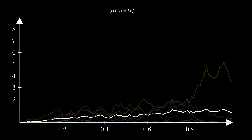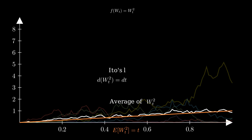The average of W squared — the white line — trends upward. As the number of simulated paths increases, the average of W squared would eventually converge to the theoretical average. See that extra term emerging? That's the key to Itô's lemma: accounting for the impact of volatility — aka randomness — in a way classical calculus misses.